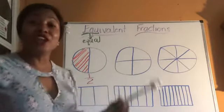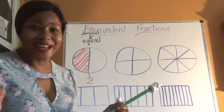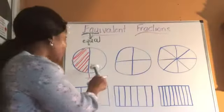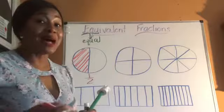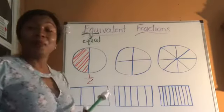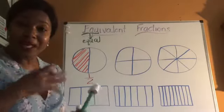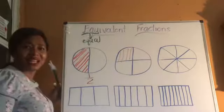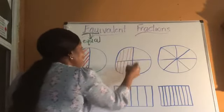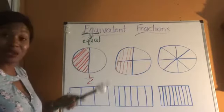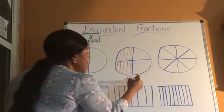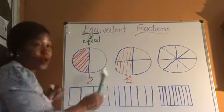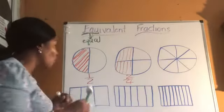Now if I have another bulla or another pizza and this time I cut it into four slices — it's the same size bulla or the same size pizza — but I still need a half. I cannot take just one slice, because that's not a half. So I'm going to have to take two slices out of the whole, which is four slices, in order to get my half. So it simply means two fourths is another name for one half.